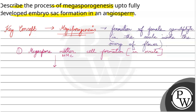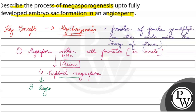Now this MMC undergoes meiosis to form four haploid megaspores. You know the process of meiosis. From these four spores, three of the haploid megaspores get degenerated.